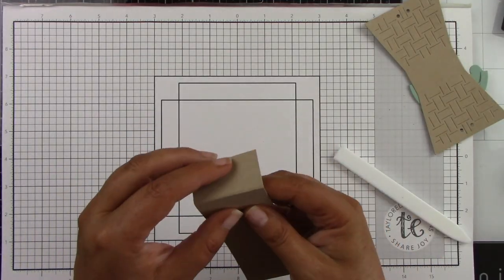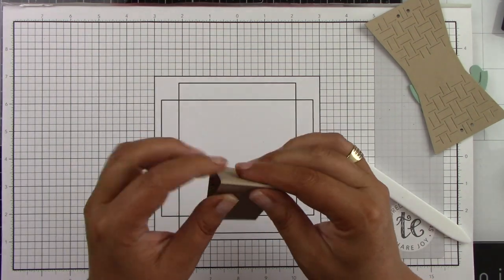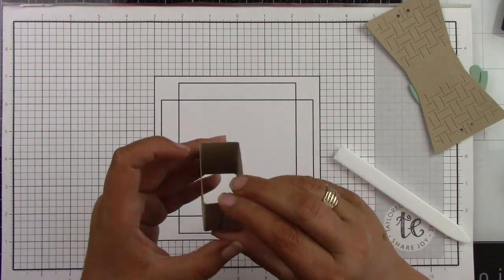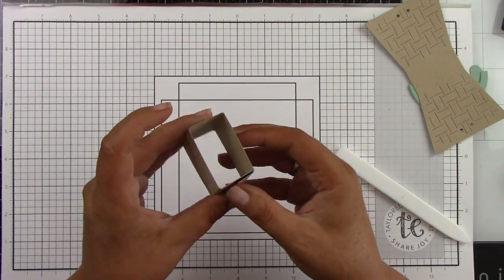So now I'm just going to fold this on all of those score marks, and this is going to make the cute little basket that holds your little treats. And that's how it just folds together. Super, super simple.